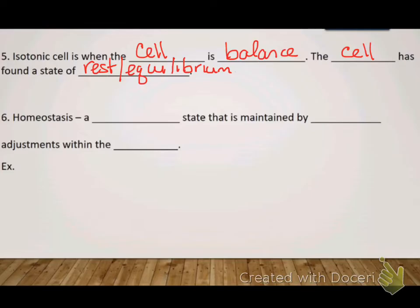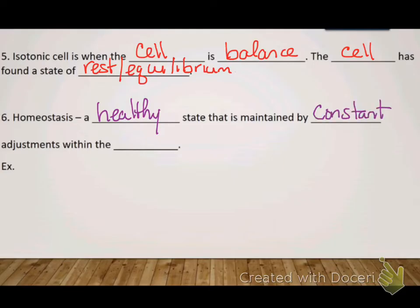Hypertonic cells and hypotonic cells will occur until it reaches this point of isotonic, which brings us to homeostasis. Homeostasis is a healthy state that is maintained by constant adjustments within the cell.